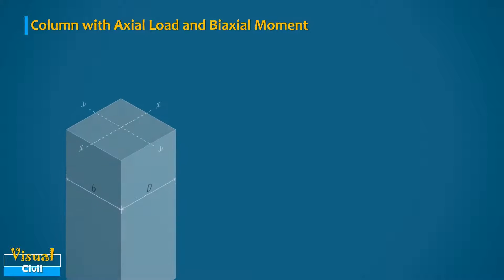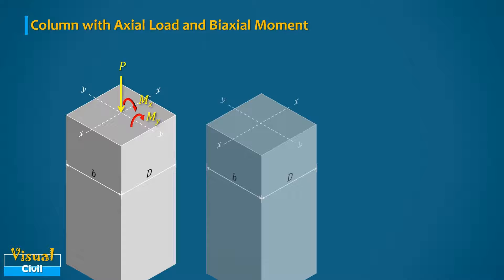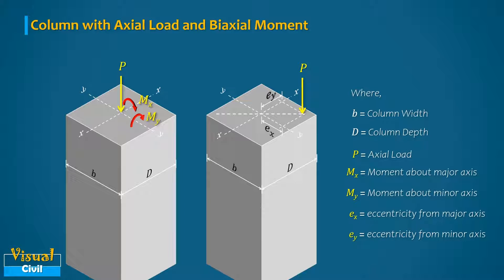When a column is subjected to an axial load with moment about both the major axis and minor axis, we can say the column is axially loaded with biaxial moment. The load P will act at an eccentricity of ex from the major axis and ey from the minor axis. Let us discuss one situation where we can find a column with biaxial moment.